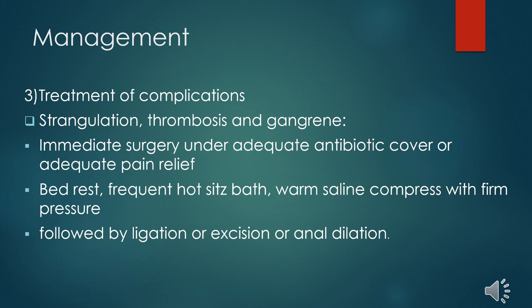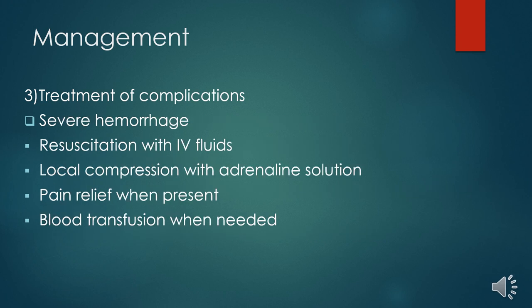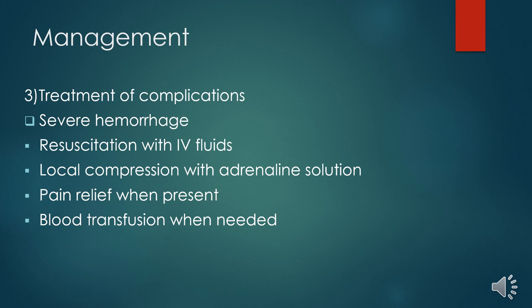Following excision, the patient may also need dilatation to prevent reoccurrence. If the patient presents with severe hemorrhoids or bleeding, they need to be resuscitated with IV fluids while running bloods for full blood count, grouping, cross-match, and save. Depending on the hemoglobin, if they are severely anemic, a blood transfusion may be given. If still bleeding profusely, local compression with adrenaline-soaked gauze is needed, as the adrenaline will cause vasoconstriction. Pain relief may also be needed.